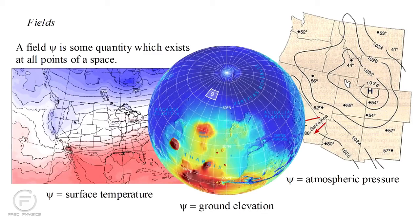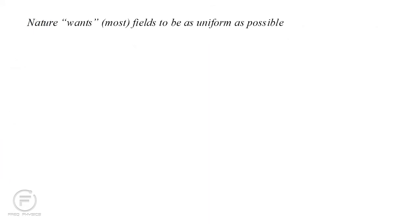For any field, physics seeks an equation to describe its behavior. In the great majority of cases, nature wants a field to be as uniform as possible. Usually this means that in equilibrium, the field is uniformly constant everywhere.